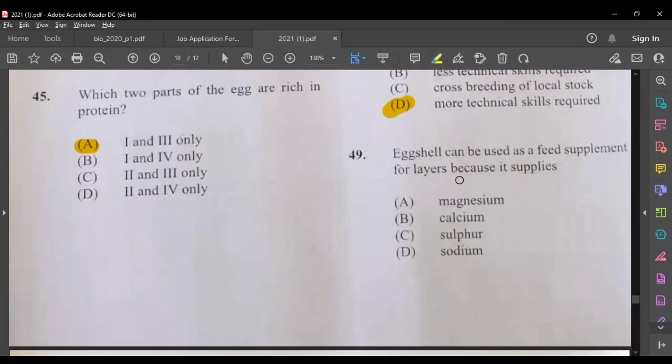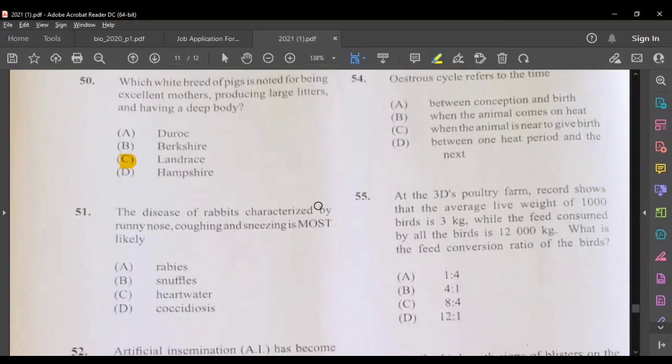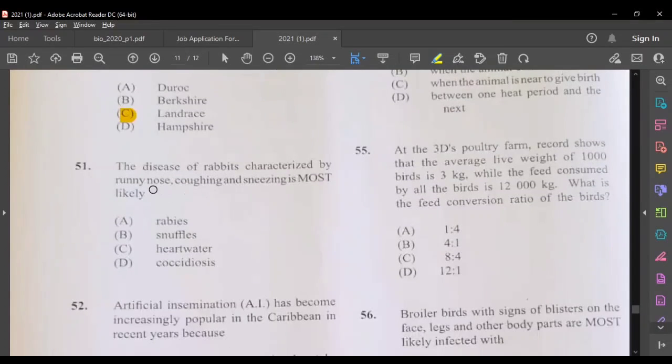Eggshell can be used as a feed supplement for layers because it contains, the eggshell is calcium carbonate, so it has lots of calcium. Which white breed of pigs is noted for being excellent mothers, producing large litters and having deep body? I think the answer here should be C. The disease of rabbits, characterized by runny nose, coughing, sneezing is most likely snuffles.